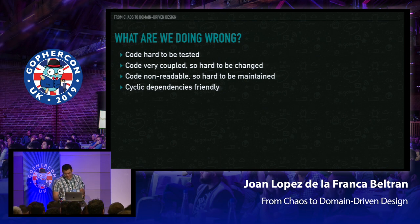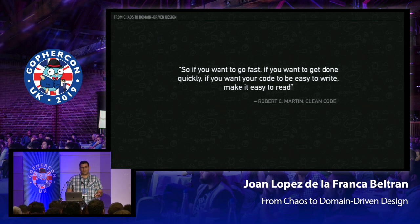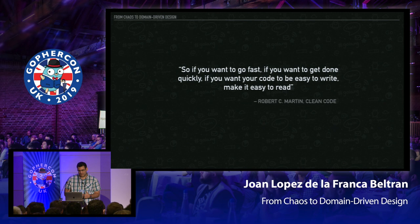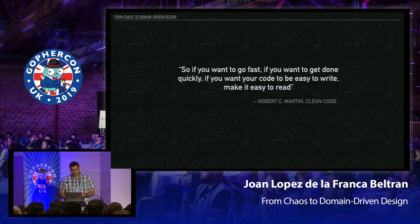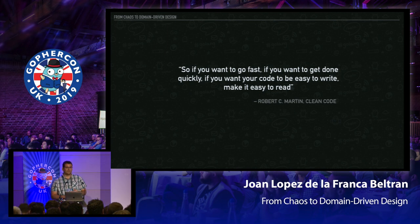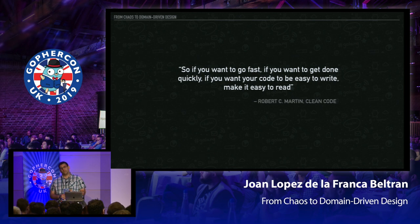A common quote from Uncle Bob came to our minds: if you want to go fast, if you want to get done quickly, if you want your code to be easy to write, make it easy to read. And that was true, because we developed a fully functional alpha version of our application by spending only a few hours. But we were really sure that coming features or future changes would be hard to implement there.